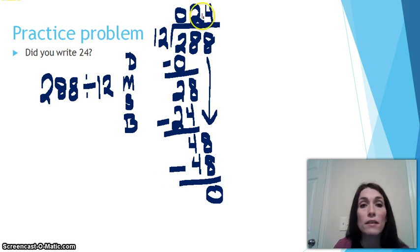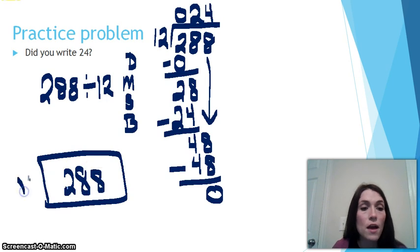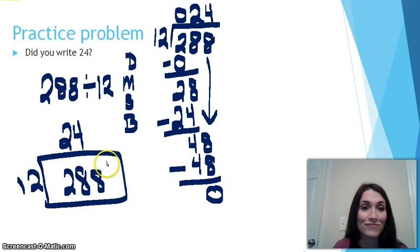So 288 divided by 12 is 24, and that is what would be represented in that area model. And if I had to draw that out, I could draw a rectangle. So 288 is represented by the area inside the rectangle. I'm dividing it into groups of 12. 12 times 24 would be 288.